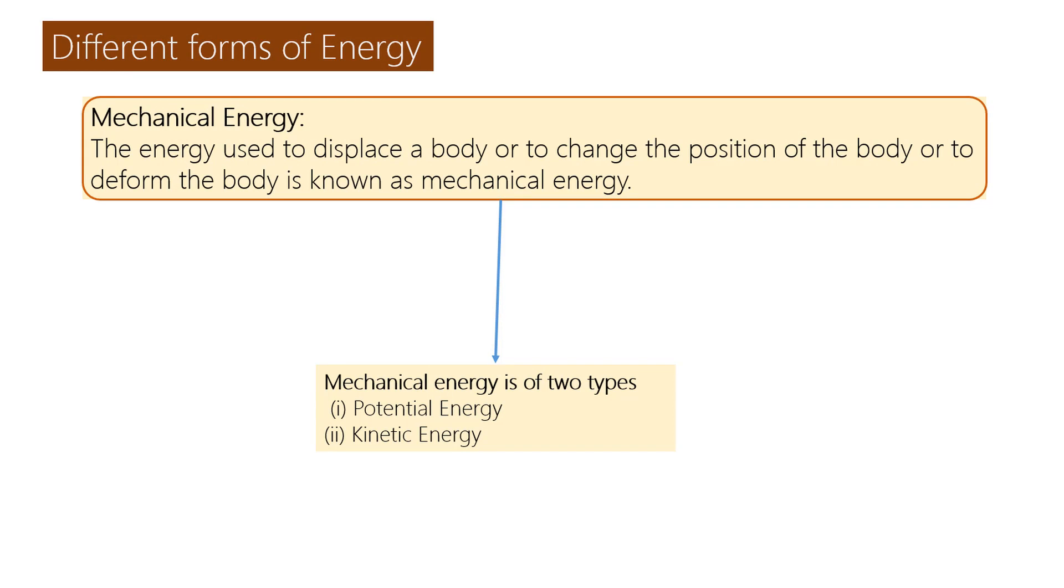Different forms of energy. Mechanical energy: The energy used to displace a body, to change the position of the body, or to deform the body is known as mechanical energy. Mechanical energy is of two types.